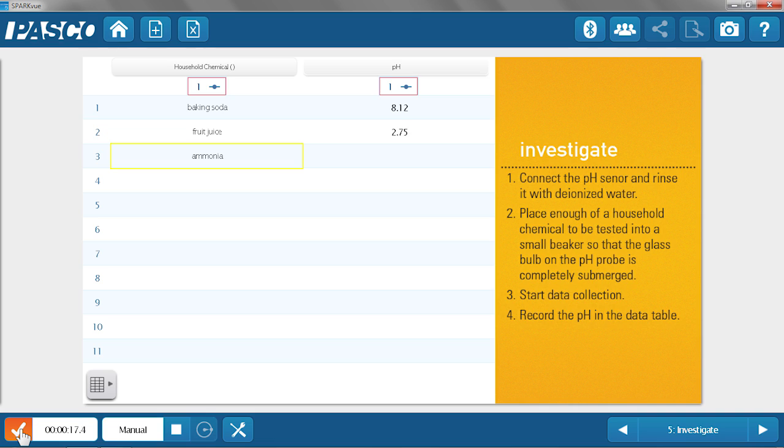I'm going to rinse it. And it's ready for the next. I'm placing it in the fruit juice. Now once he puts it in the fruit juice, I see that it's a much lower pH, indicating that it is acidic. And your students will be able to figure that out. Once it stabilizes again, I hit check.